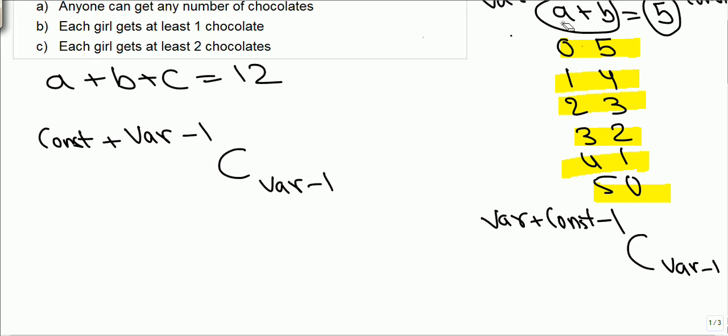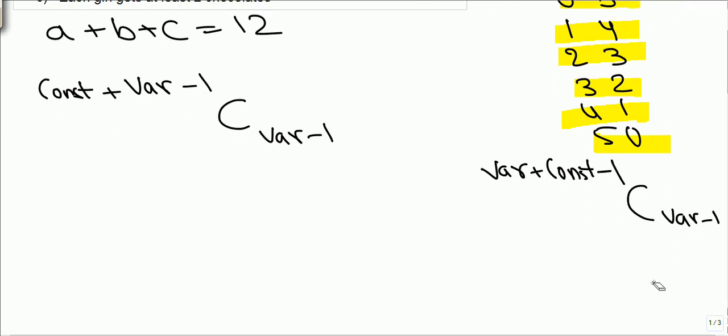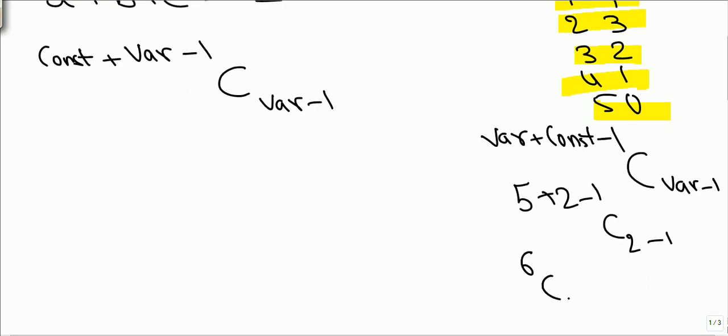Here what we had 2 variables, 5 constant, total 7. So what we'll be doing is 5 plus 2 minus 1, 2 minus 1. So what we get 6 C 1, answer is 6.